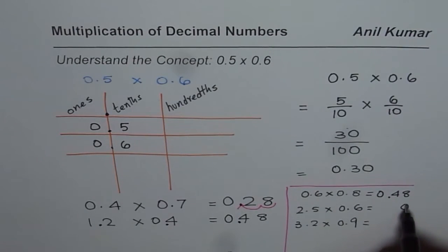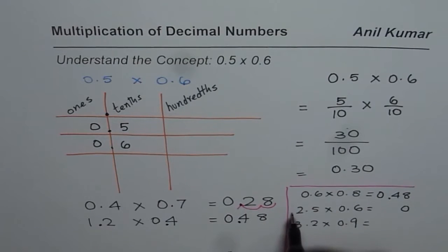When you multiply 25 by 6, 6 times 5 is 30. 6 times 2 is 12, 12 plus 3 is 15. Now you have two numbers after decimal. So you need to place decimal there so that you still have two numbers after decimal. 1.50 is your answer.